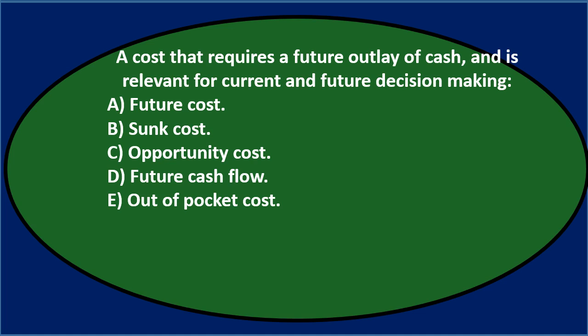Let's go through this again using the process of elimination. A cost that requires a future outlay of cash and is relevant for current and future decision making. Option A, future cost — that doesn't quite ring a bell; it's not a term we typically use. Sunk cost is a term that rings a bell and we want to be aware of in managerial accounting decision making. Opportunity cost is another cost we want to keep aware of. Future cash flow sounds pretty similar to future cost, and we can't really have both.